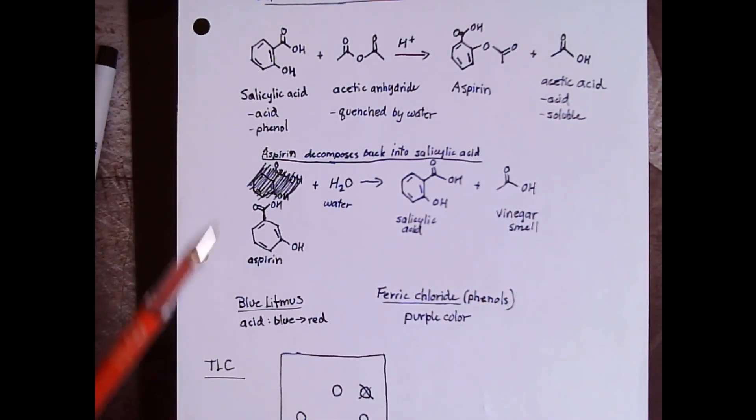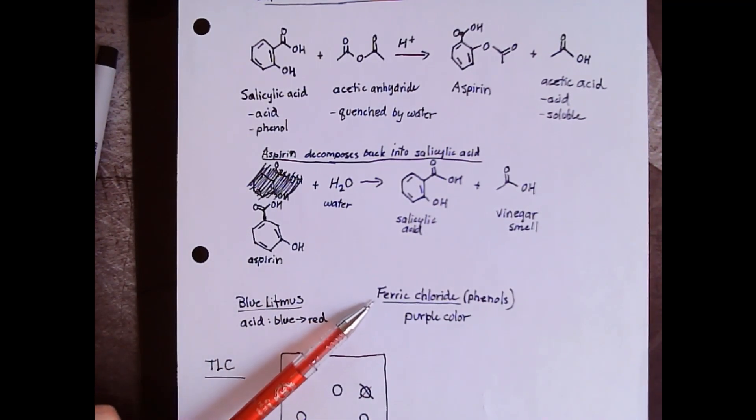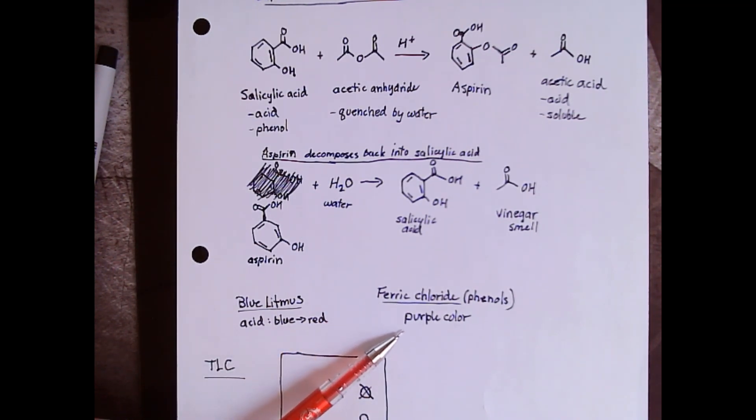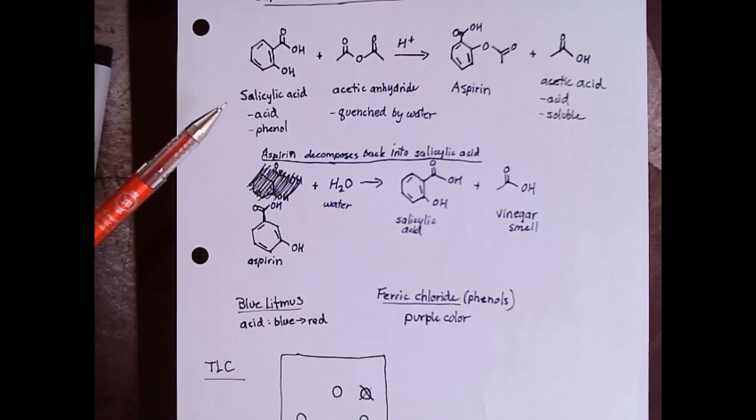those two things are present, we'll see a color change. For the ferric chloride test, this test is looking for phenol groups. It's usually a yellow colored solution - if it comes into contact with a phenol, it'll change into a purple color. The only component from the reaction that has a phenol